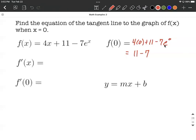Recall that anything raised to the zero power equals 1. So we get 11 - 7(1) = 4. Our ordered pair is (0, 4).